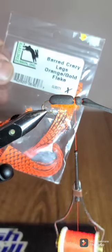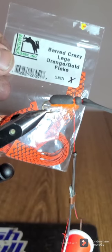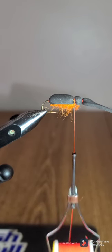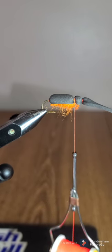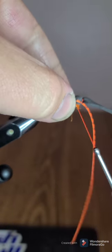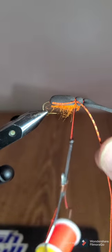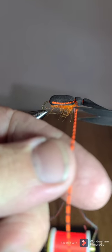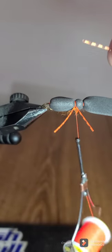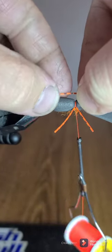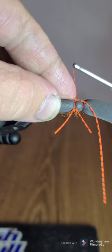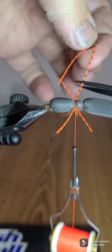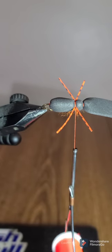Next I'm going to tie in a set of legs. I'm using the Barred Crazy Legs in the Orange and Gold Flake. Other guys have been using the Hairline Centipede Legs. I'm just taking, I just let the thread hold the tension on the leg. Cut it. And same thing to the other side. Try to get them pretty even. Same thing, thread tension holding the leg there. Cut it.